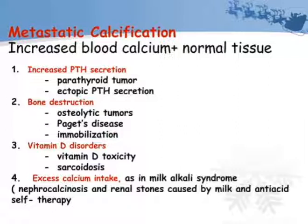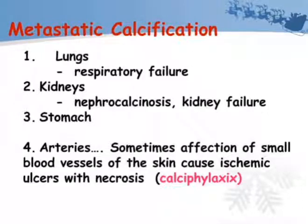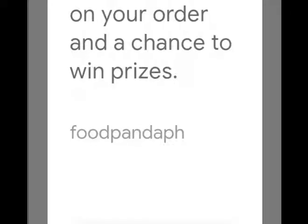Metastatic calcification is caused by increased blood calcium with normal tissue. Causes include: increased PTH secretion from parathyroid tumor or ectopic PTH secretion; bone destruction from osteolytic tumors, Paget's disease, and immobilization; vitamin D disorders such as vitamin D toxicity and sarcoidosis; and excess calcium intake as in milk-alkali syndrome, causing nephrocalcinosis and renal stones. Effects: in lungs, respiratory failure; in kidneys, nephrocalcinosis and kidney failure; in stomach, ulcers; in arteries, affecting small blood vessels of the skin causing ischemic ulcers with necrosis — called calciphylaxis.